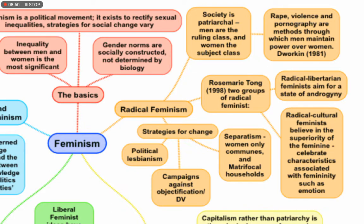How do radical feminists want to change the state of affairs of patriarchy where men are the ruling class? Some offer political lesbianism — a concept to be discussed in a separate video. Some maintain that there should be separatism: women-only communes and matrifocal households where women live separately from men. Some would say these are far-fetched ideas and far from a practical approach, but it is a school of thought with its own way of going about things, its own perspective on gender inequality caused by the patriarchal system.